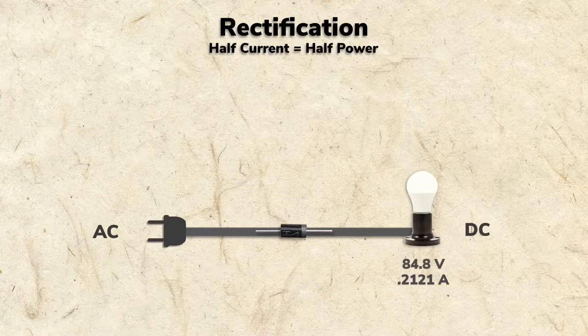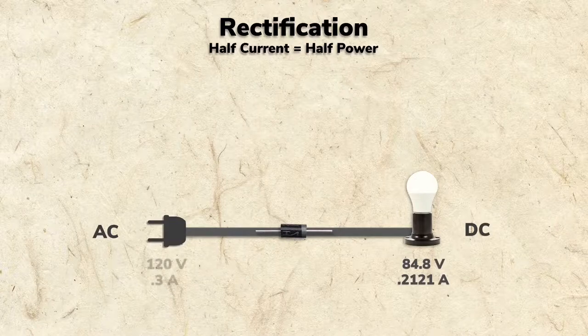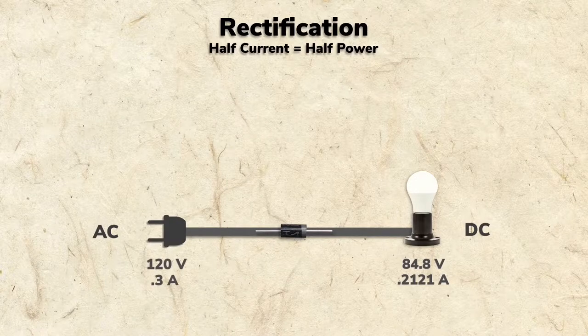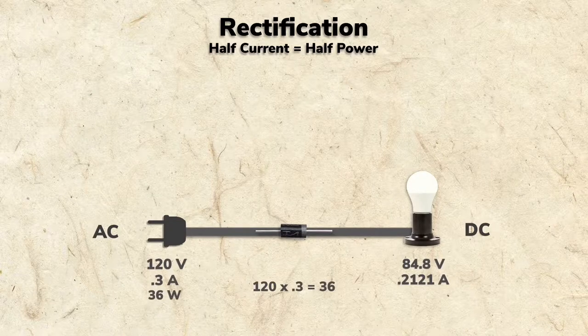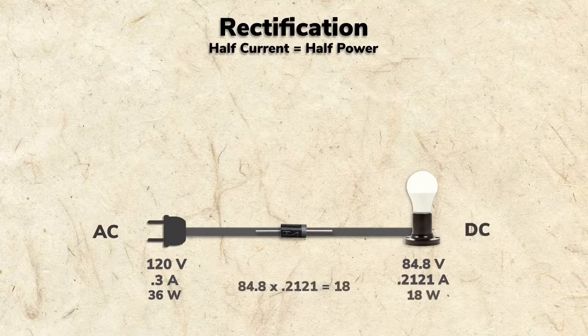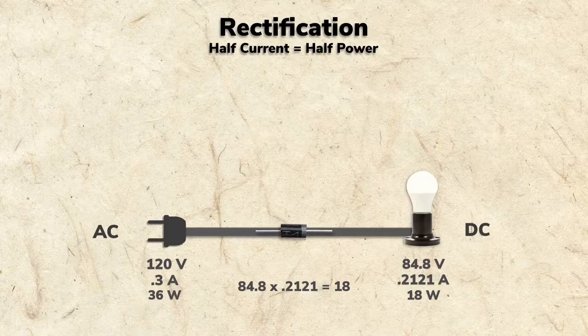So, is 84.8 volts at 0.2121 amps half the power of 120 volts at 0.3 amps? Let's check. 120 times 0.3 gives us 36 watts, and 84.8 times 0.2121 gives us 18.